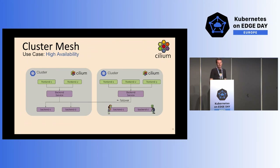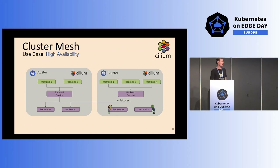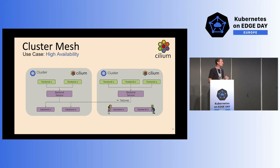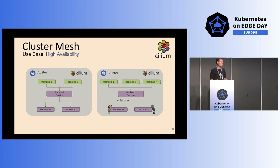Let's dive deeper on ClusterMesh use cases. The first use case is the high availability use case, where you have two or more clusters connected with Cilium ClusterMesh. In each cluster, you create a namespace and a service, and then you annotate that service with the global Cilium I/O global service annotation to enable it to be available across clusters. Using eBPF, Cilium understands endpoints in each cluster and advertises those endpoints across clusters, so in each cluster you will see endpoints from both clusters being available. This means if pods in a cluster have a misconfiguration or are being redeployed, the service can fail over connectivity to the other cluster.